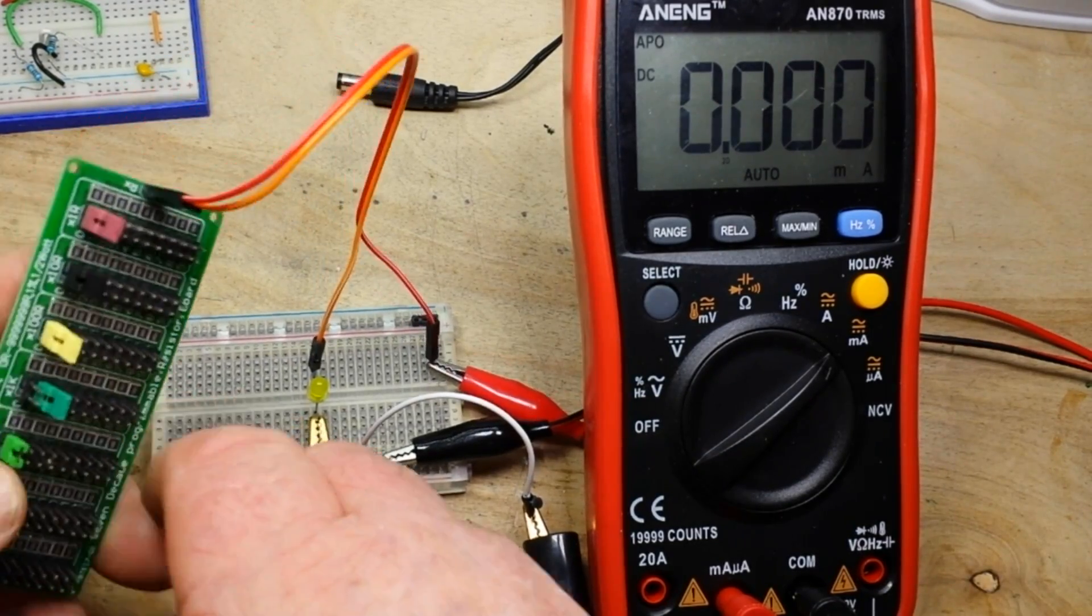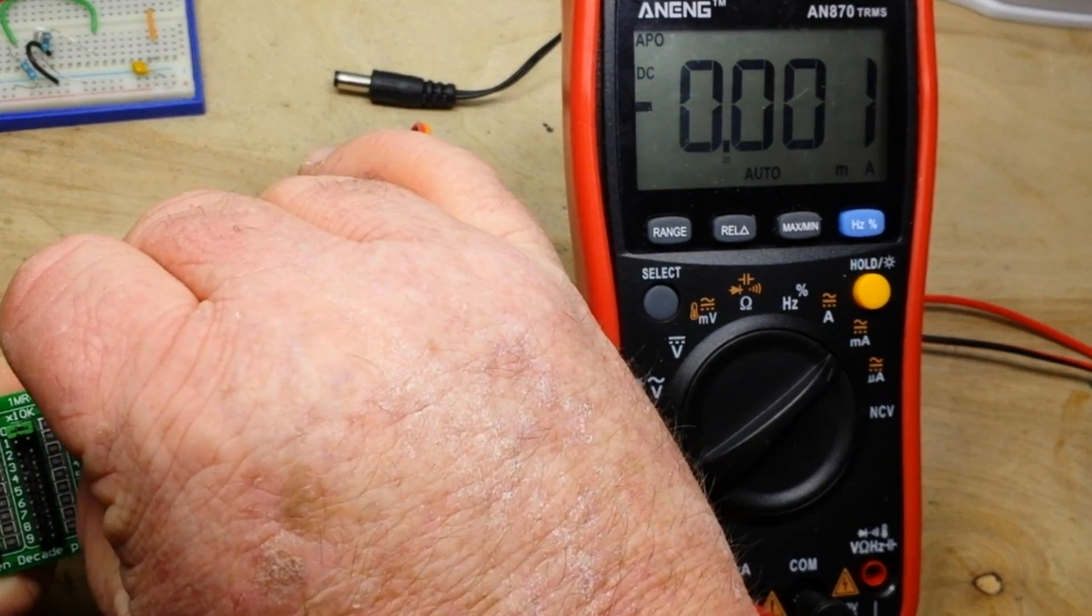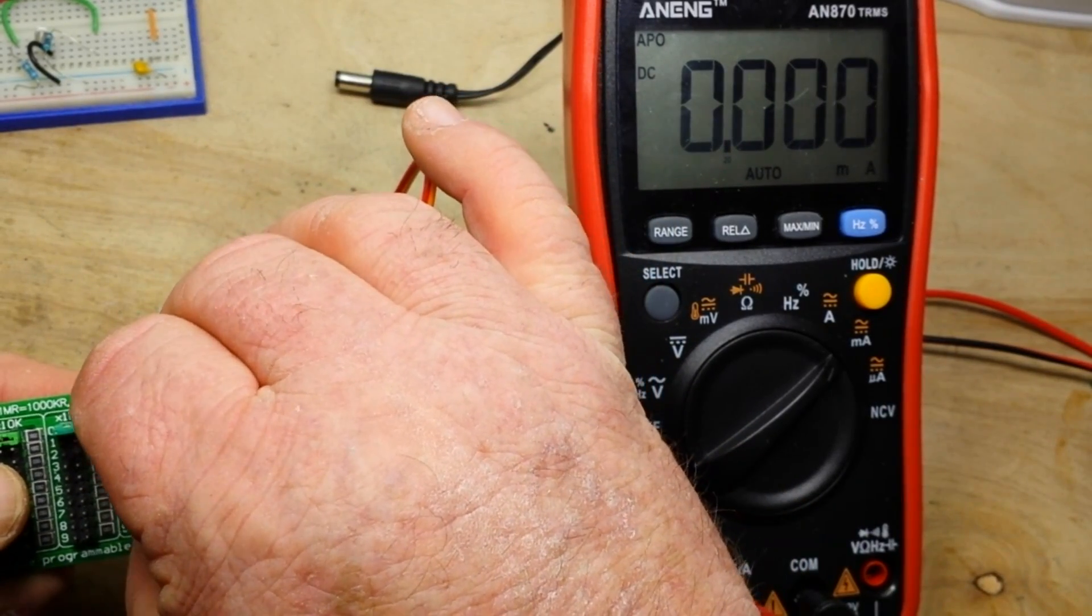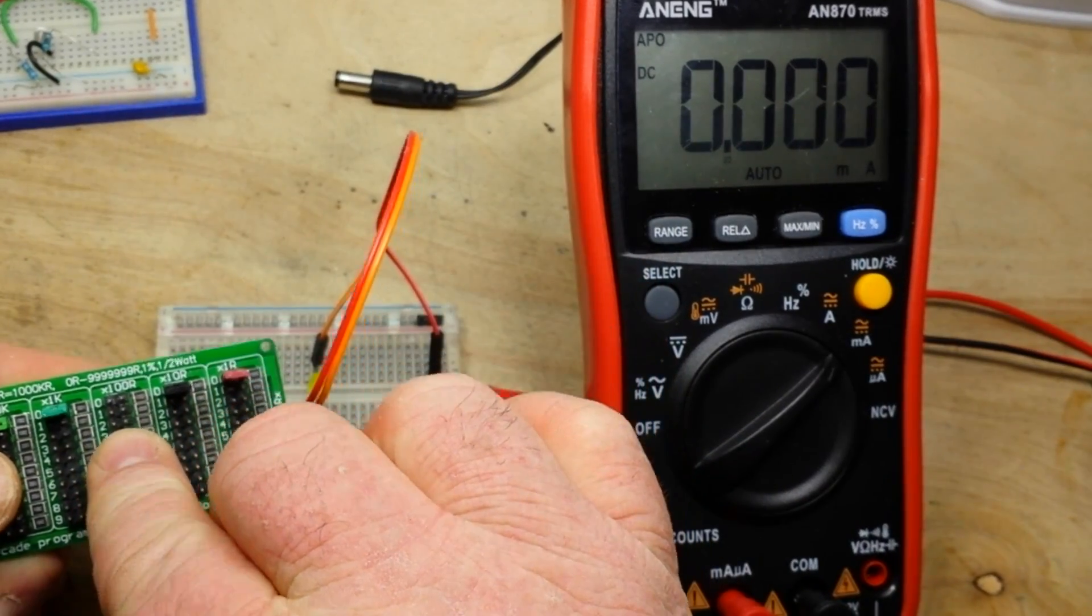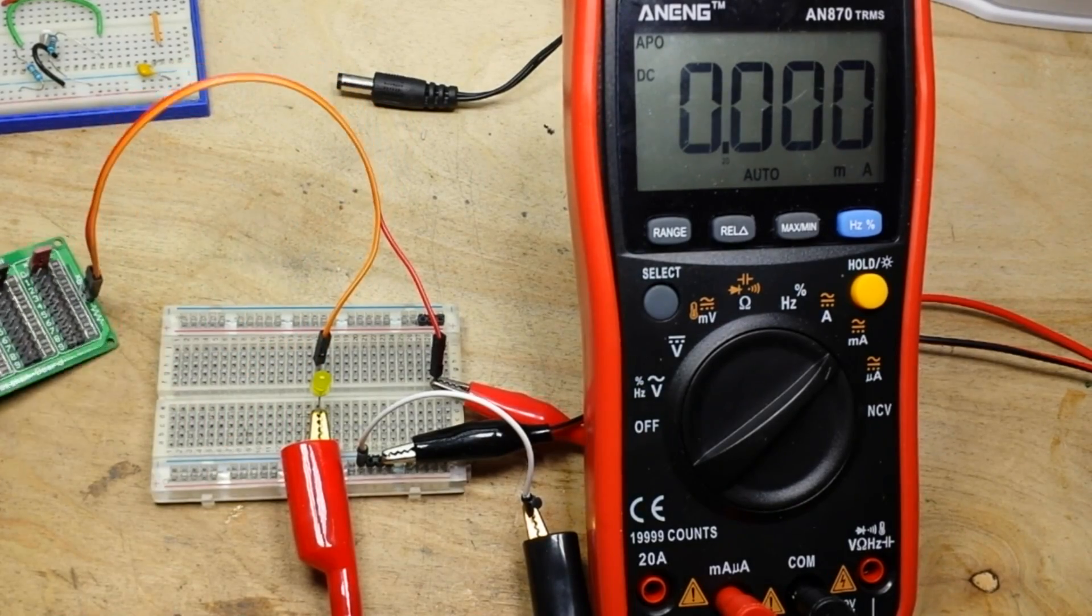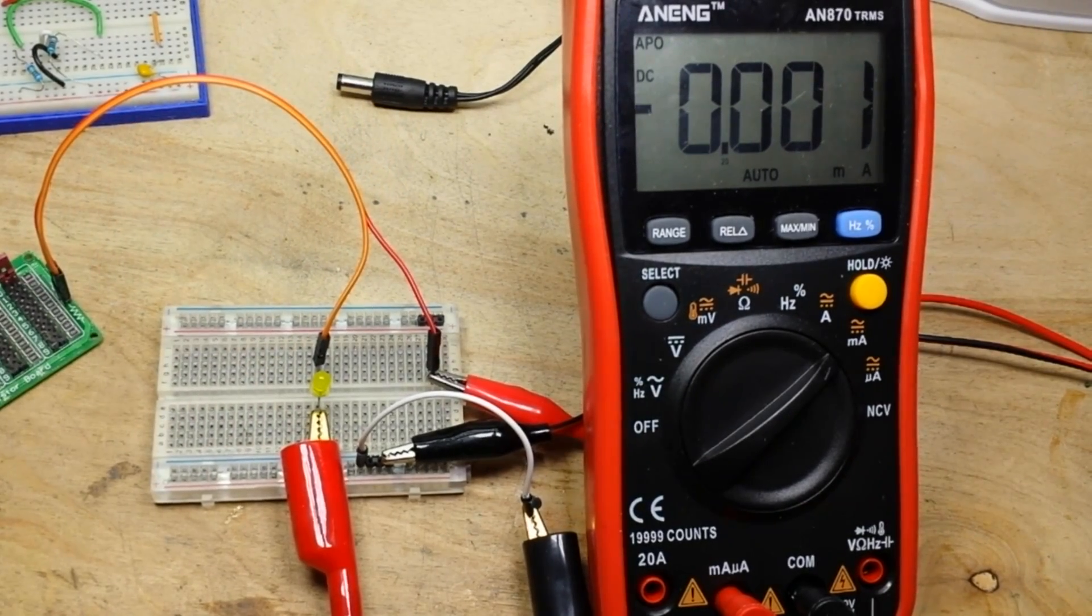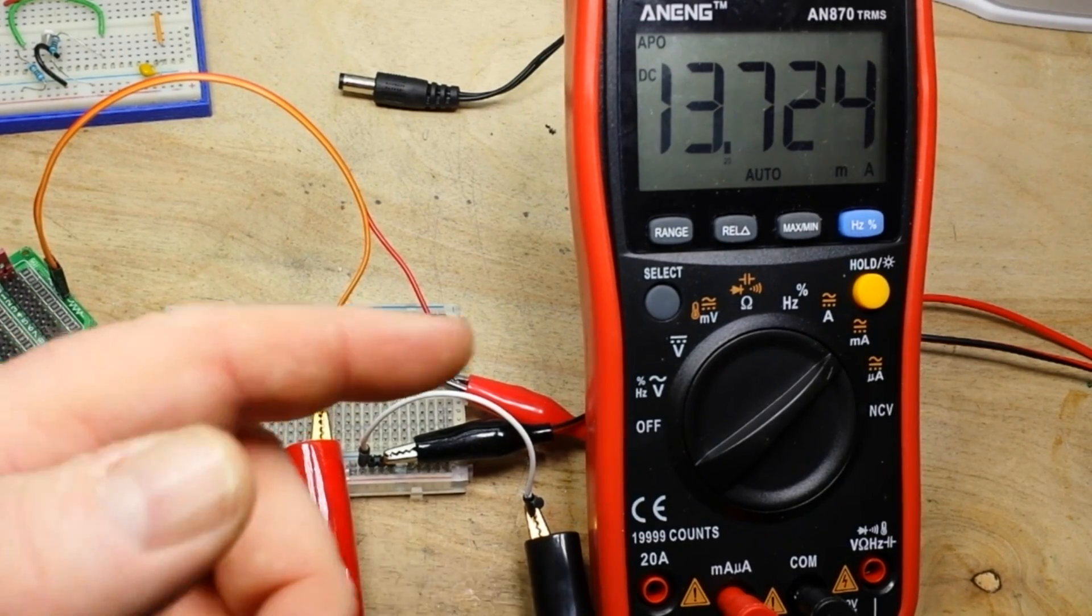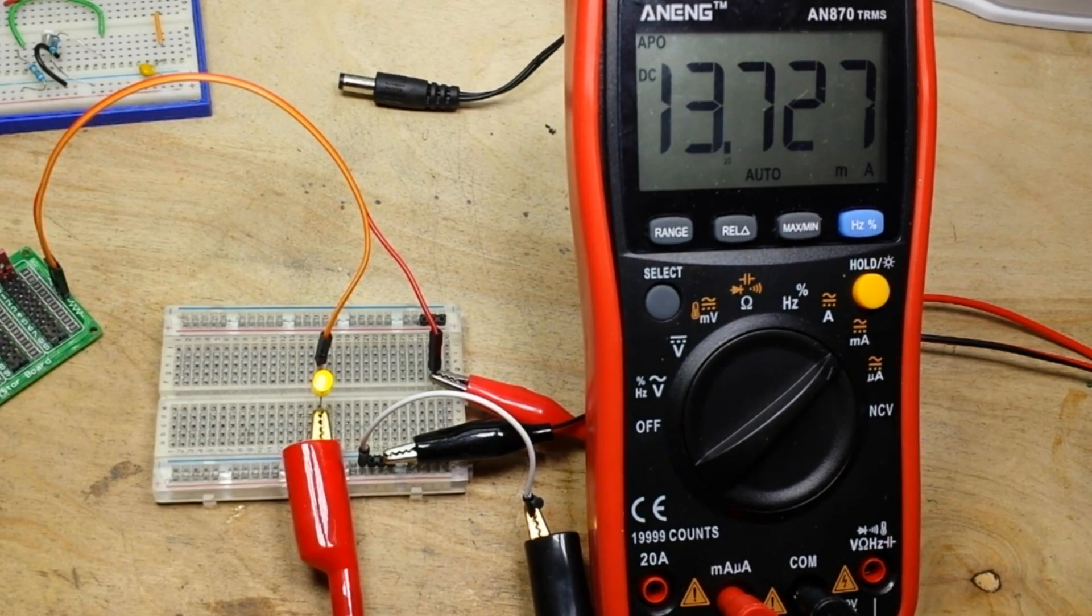So, now what you can do is adjust. Let's go 500 ohms, which is 470. That would be close enough. You can see the LED is now much brighter. We are at 13.7, call it 14 milliamps.